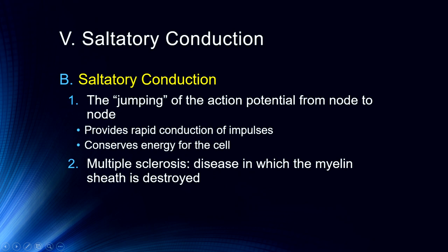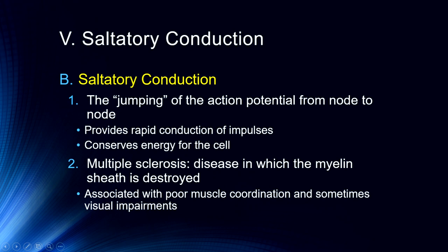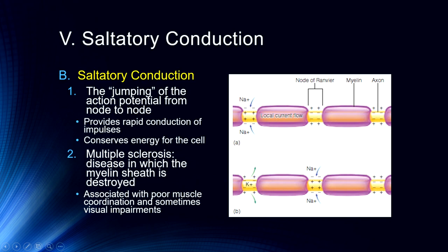Unfortunately, multiple sclerosis is a disease in which the myelin sheath is destroyed by the body's immune system, and is associated with poor muscle coordination, sometimes sensory and visual impairments, and eventually, due to the degradation of the myelin sheath, loss of functioning altogether. In the peripheral nervous system each segment of myelin is a single Schwann cell, while in the central nervous system an oligodendrocyte sends out multiple projections to cover the axon. At the nodes of Ranvier the action potential occurs, jumping from node to node and traveling the length of the axon much faster than if it had to open ion channels along the entire way.